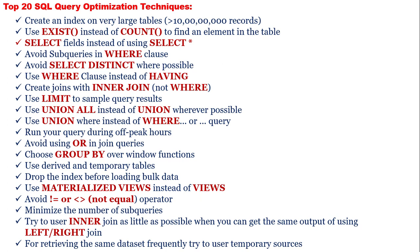Number 6: Use WHERE clause instead of HAVING. Number 7: Create joins with INNER JOIN, not WHERE. Number 8: Use LIMIT to sample query results. Number 9: Use UNION ALL instead of UNION.